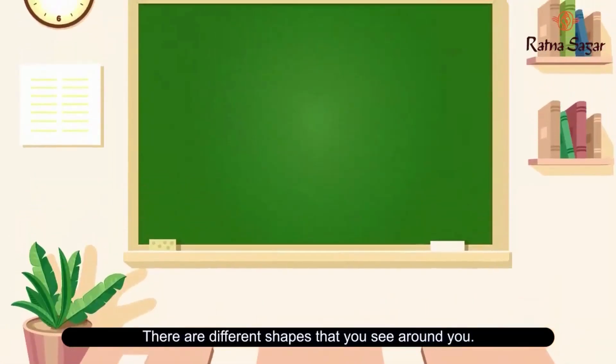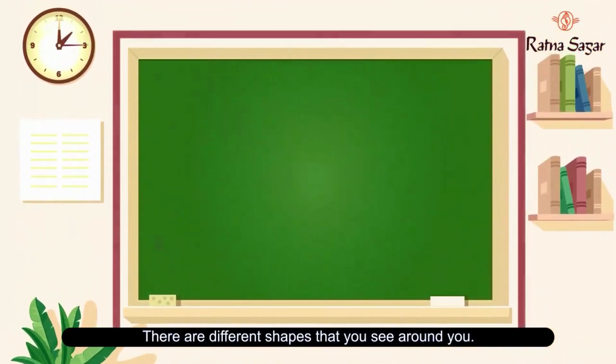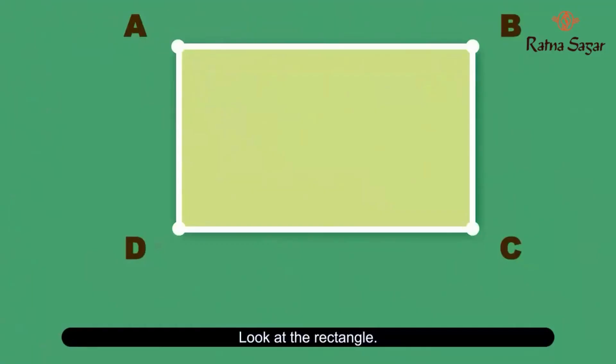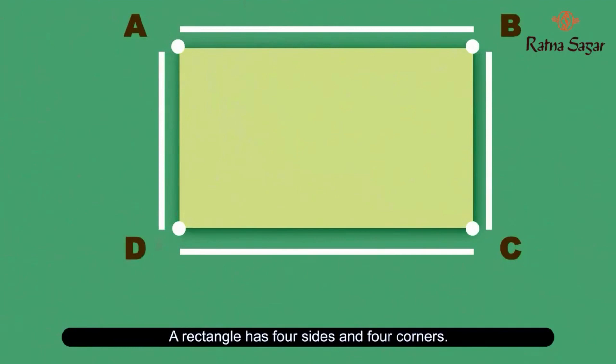There are different shapes that you see around you. Look at this board. It has the shape of a rectangle. Look at the rectangle. A rectangle has 4 sides and 4 corners.